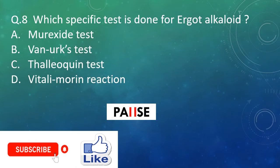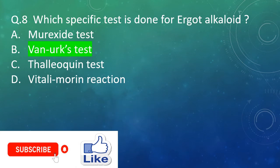Question eight: Which specific test is done for ergot alkaloids? Option A: Mayer's exact test. Option B: Van Urk test. Option C: Thalleioquin test. Option D: Vitali-Morin reaction. And the right answer is Option B: Van Urk test.